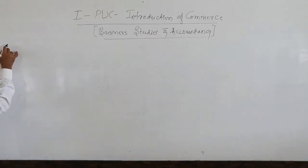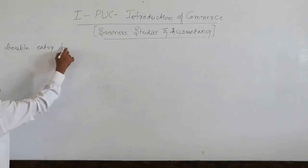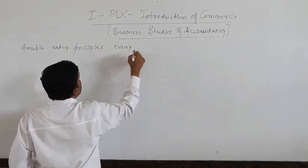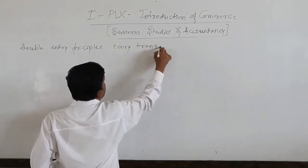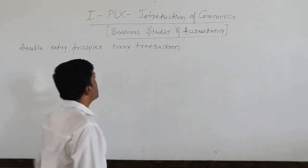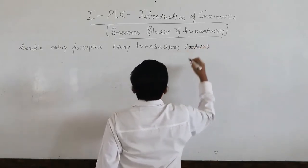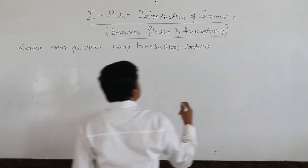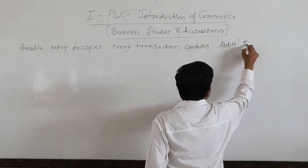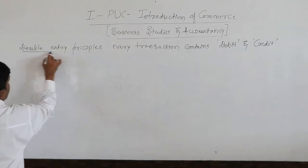As per double entry principles, every transaction — every business transaction — contains two aspects: the term debit and credit. This is very important: the double entry principles.